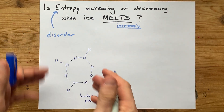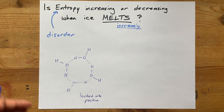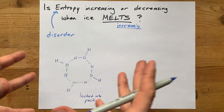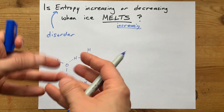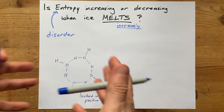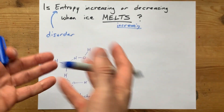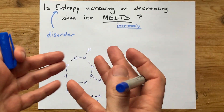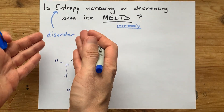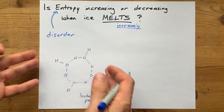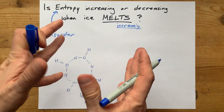There are little vibrations happening, but ice doesn't just flow on its own — it just sits there. It's a solid. There's not a lot of disorder. Everything's neatly packed.